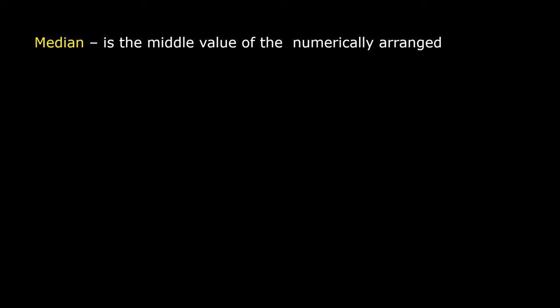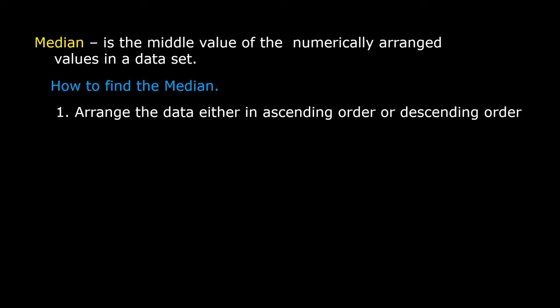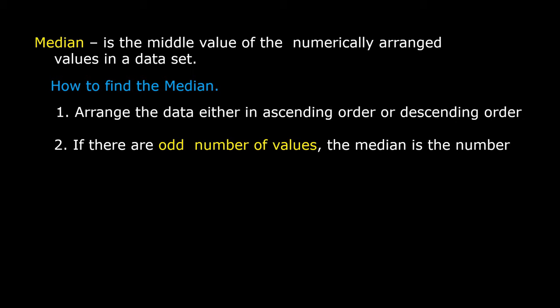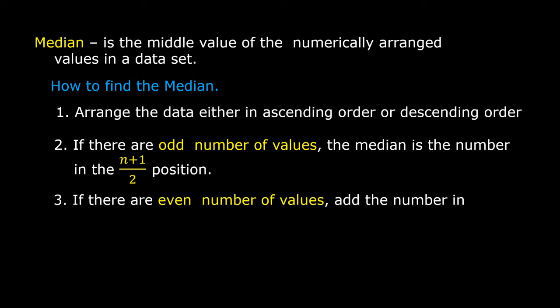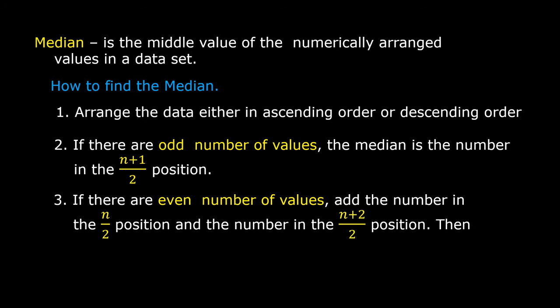Median is the middle value of the numerically arranged values in a data set. How to find the median: step number one, arrange the data in ascending or descending order. Step number two, if there are an odd number of values, the median is the number in the (n+1)/2 position. If there are an even number of values, add the number in the n/2 position and the number in the (n+2)/2 position, then divide the sum by two.